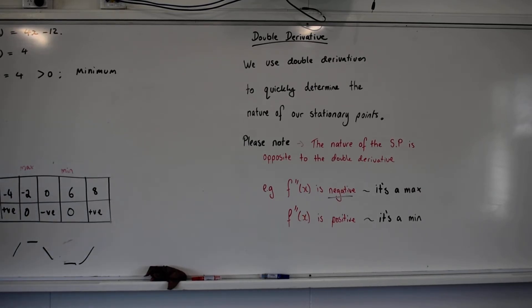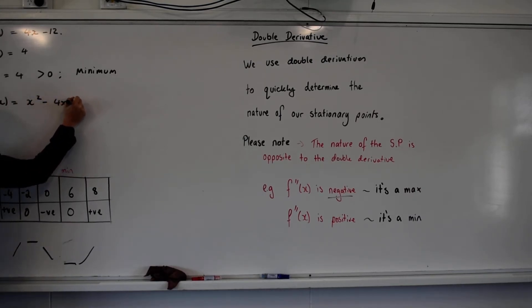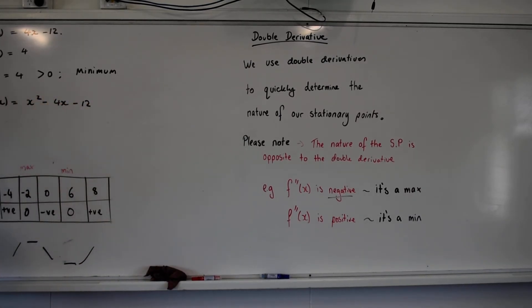Up to you. So for question two, F dash x equals x squared minus 4x minus 12. F double dash x equals 2x minus 4. I determine the nature of whichever one I want first. Let's go negative 2.